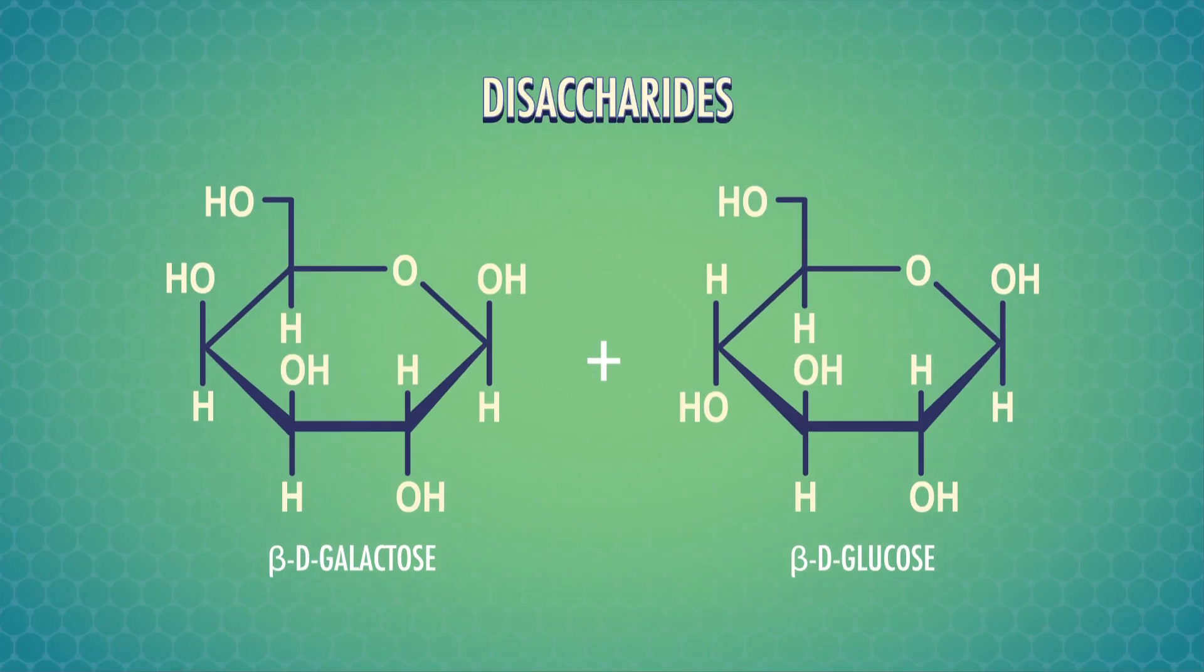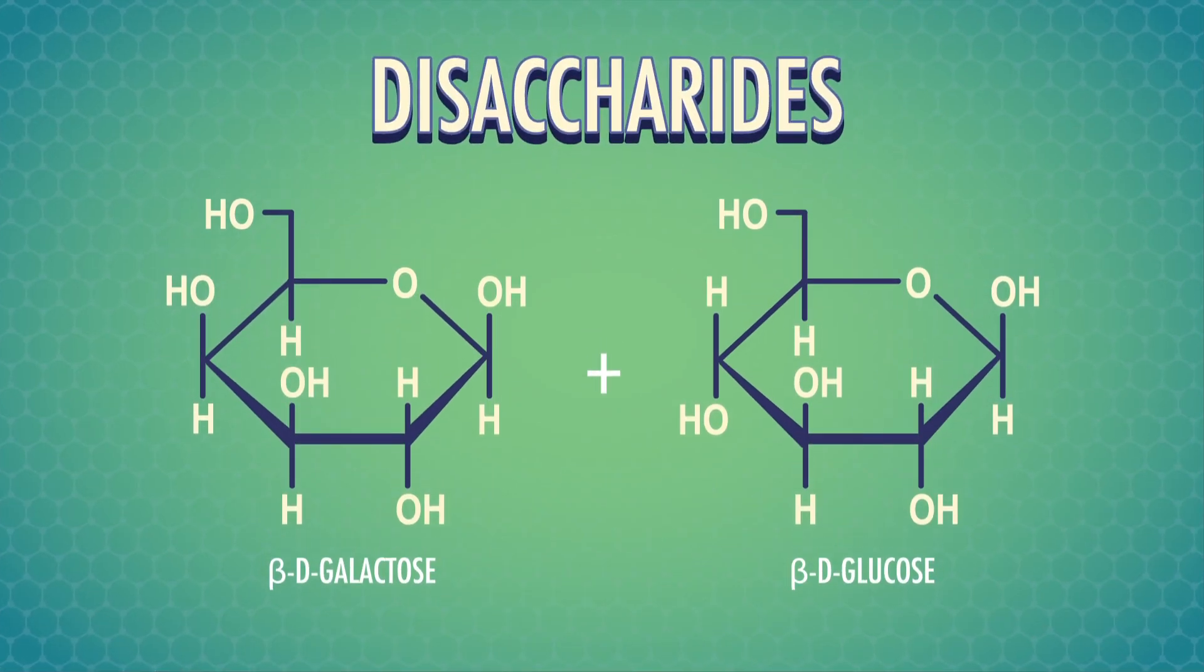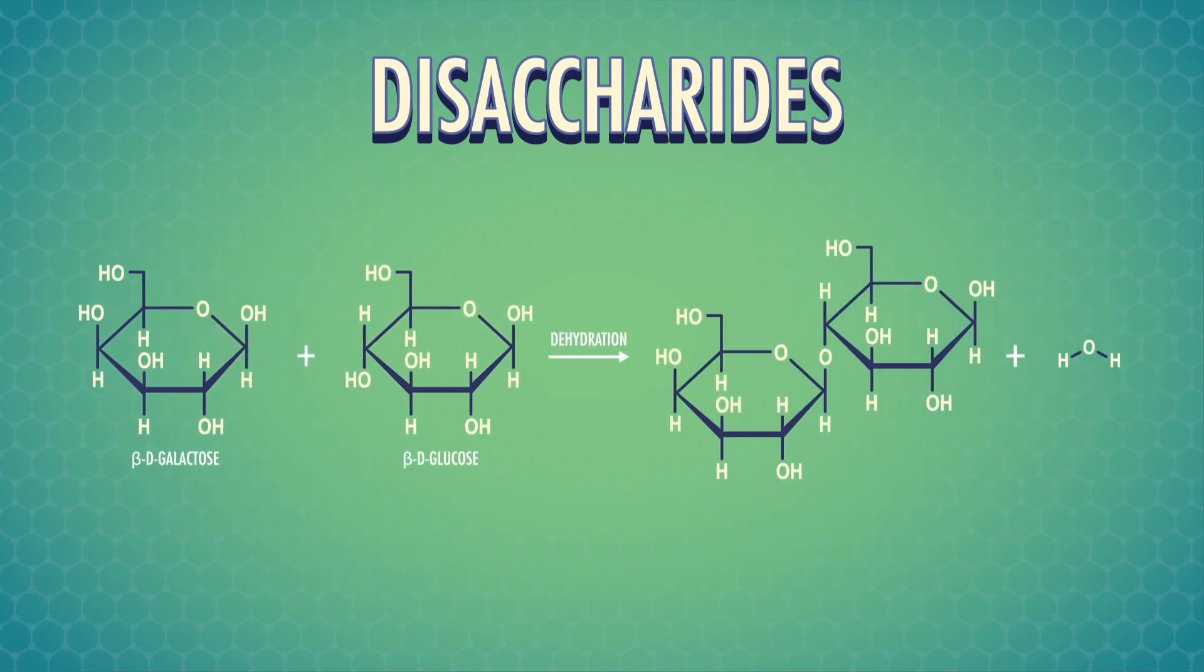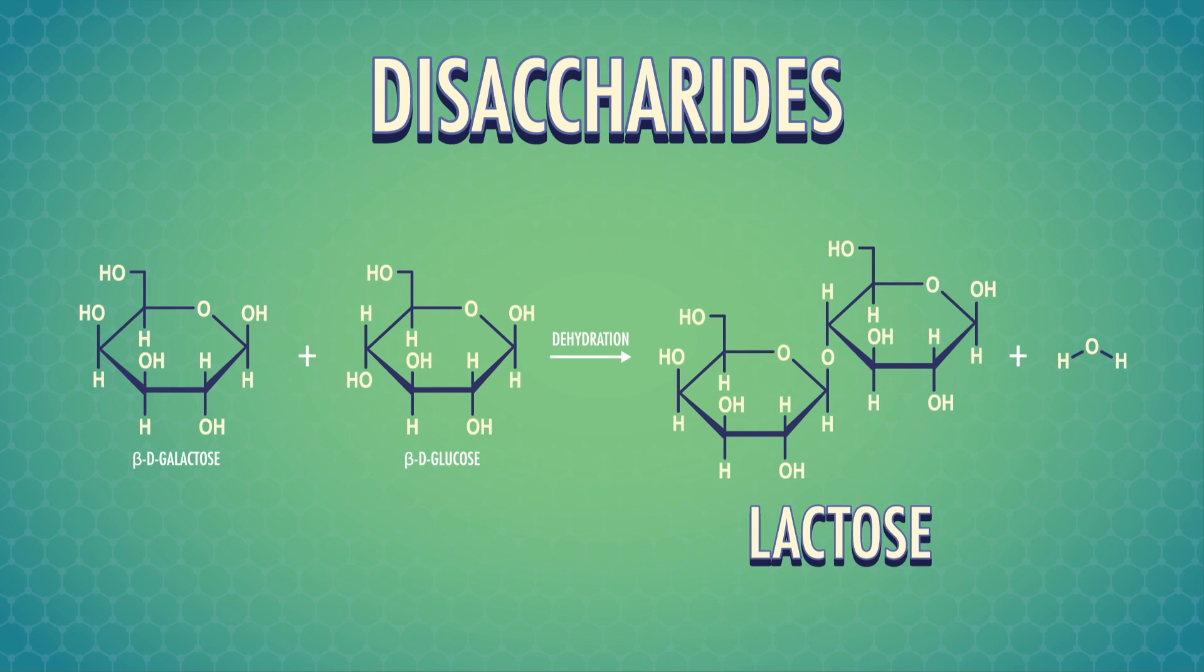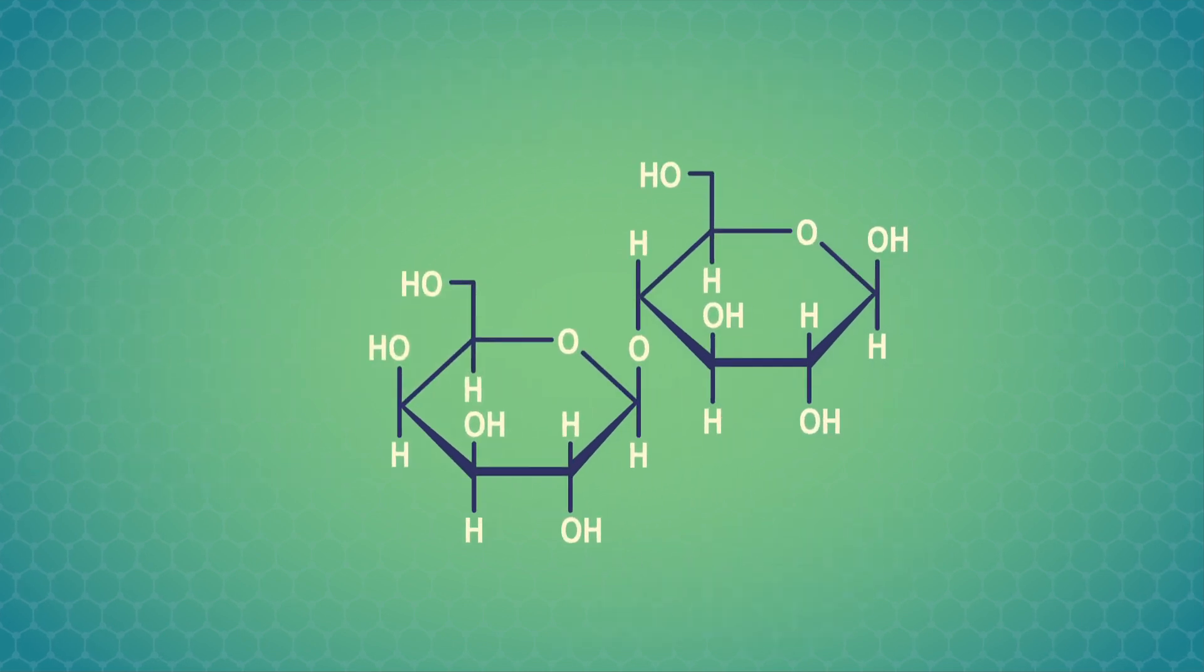Two carbohydrates form disaccharides through an overall dehydration reaction, which results in a new covalent bond between the two rings. We name this bond based on the stereochemistry of the anomeric carbon and the carbons that are involved in the bond. For example, when galactose links up with glucose, we get lactose – the sugar in milk that some people can't break down so well. In other words, they have lactose intolerance.